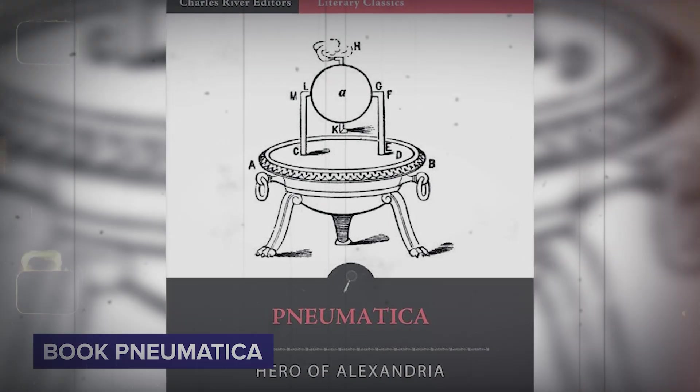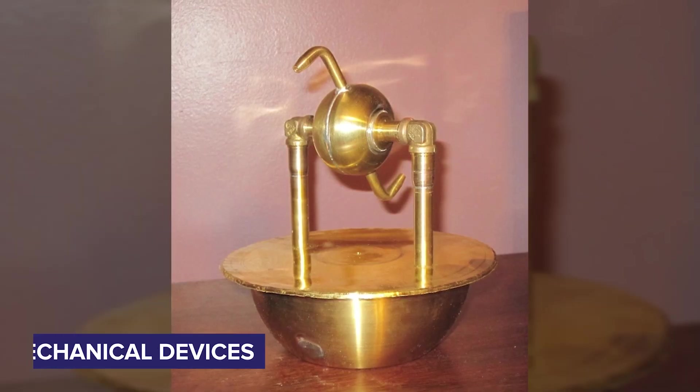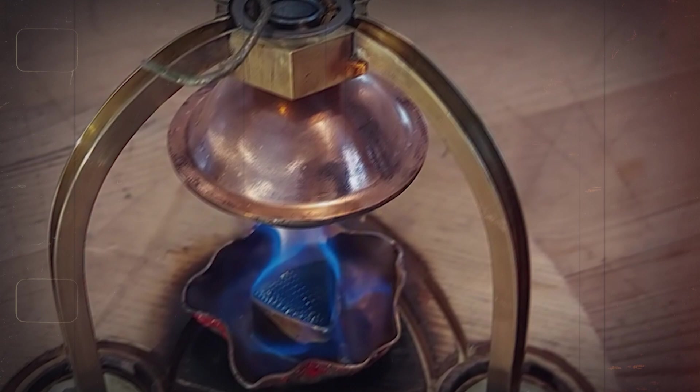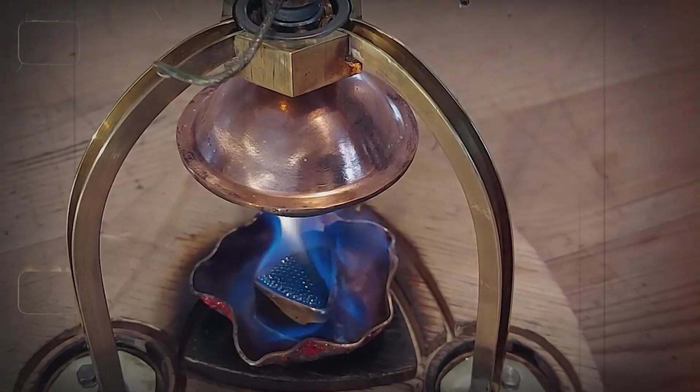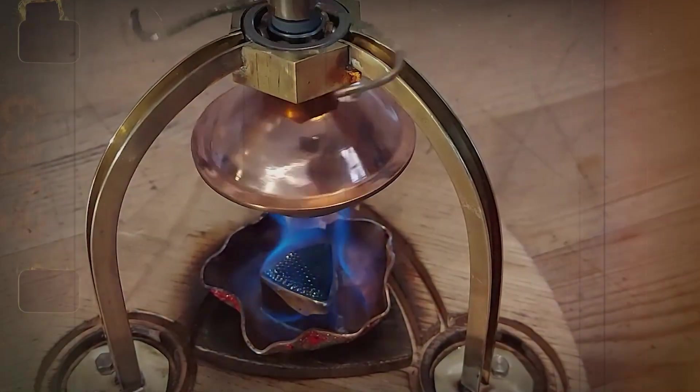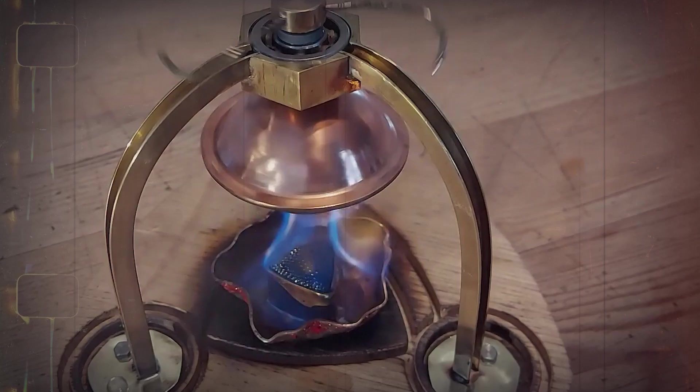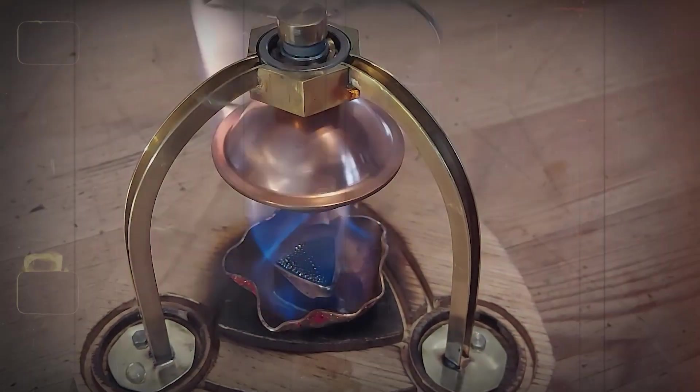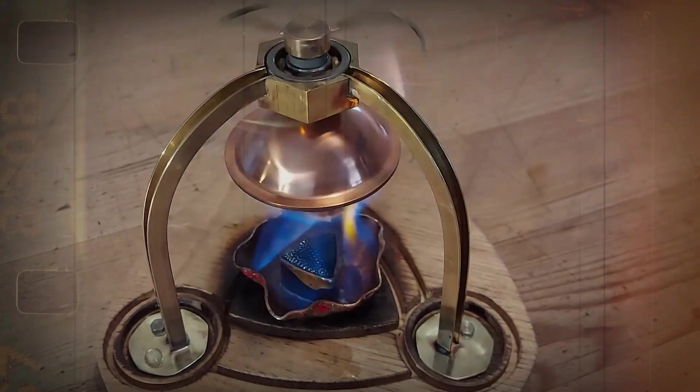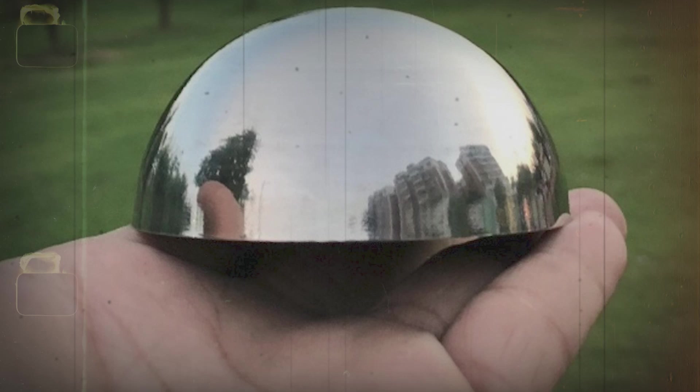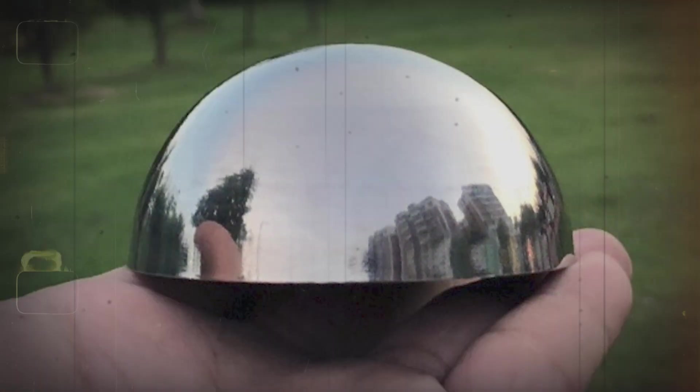The Aeolipile was the invention of Hero and was found in his book Pneumatica, containing about 80 mechanical devices. The Aeolipile stands out from the other inventions in his collection, as it was the earliest known steam-using device and it showed how mechanical motion could be created with steam power.